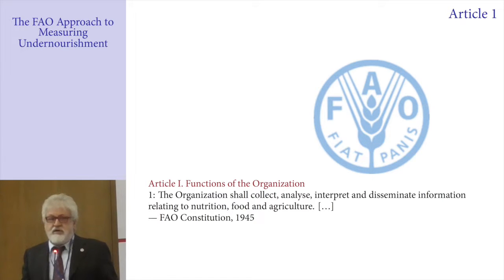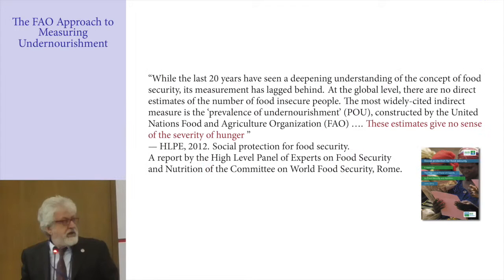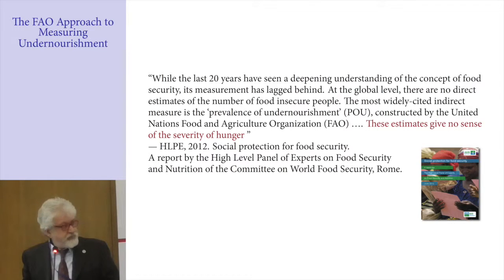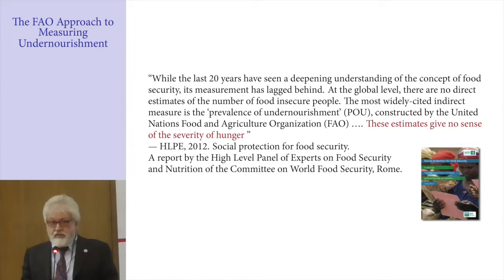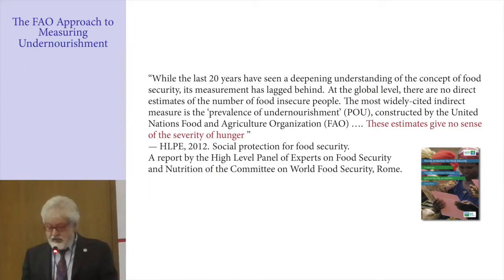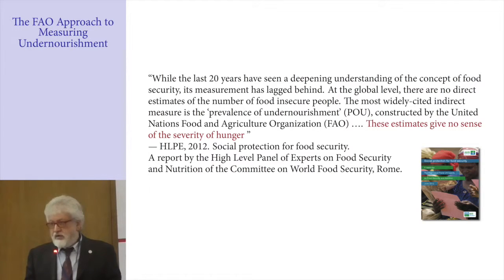So it's not something of recent interest — it's been there since the foundation in 1940. This quote is from a report published in 2012, which stressed that despite being the most widely cited measures, the prevalence of undernourishment — the hunger numbers that FAO produces every year as a hunger map — are still problematic because they give no sense of the severity of hunger.